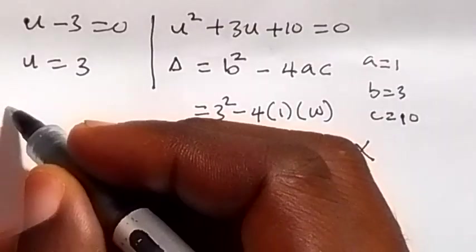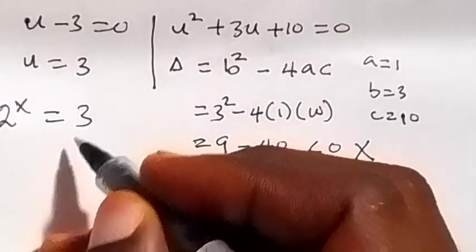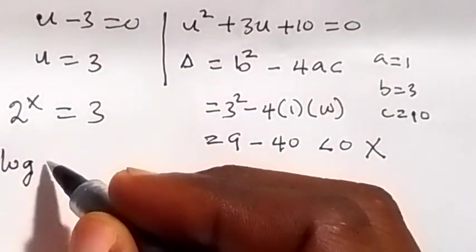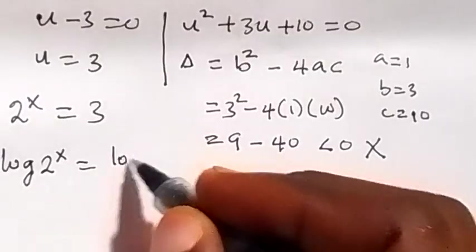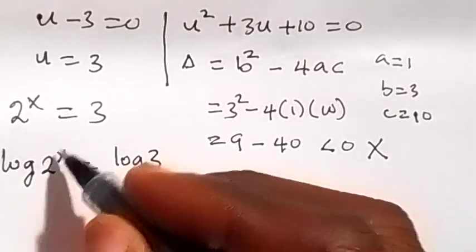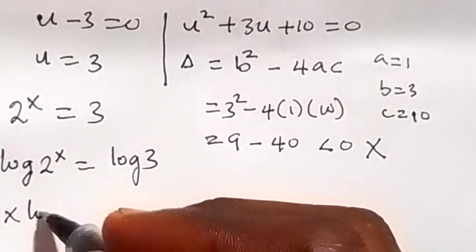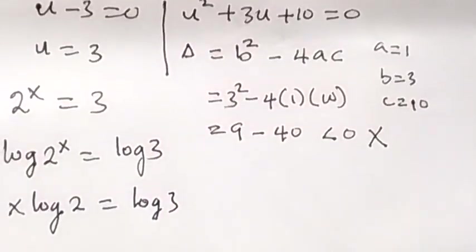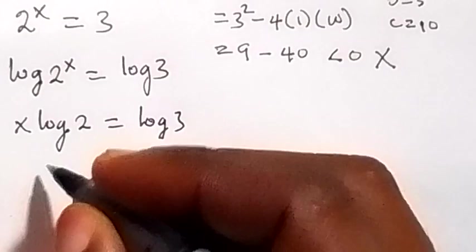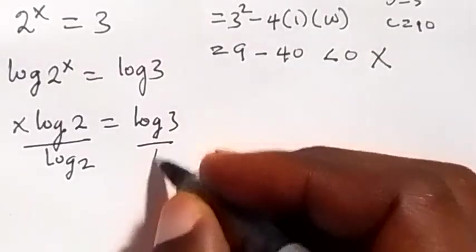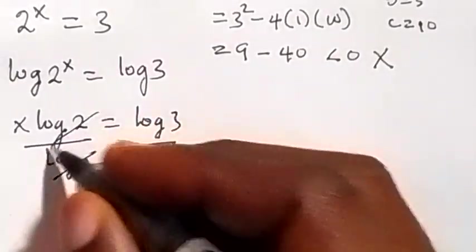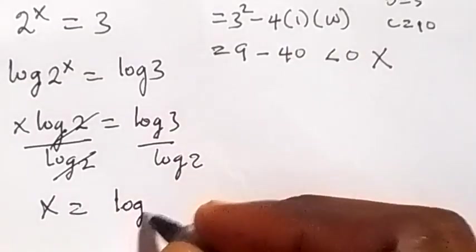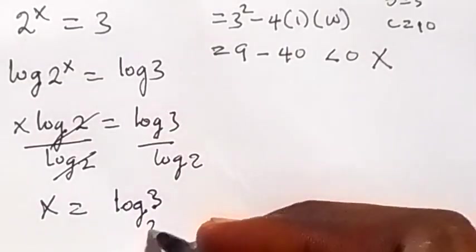Coming back, we have u equals to 3, and u is 2 raised to power x, so that's 2 raised to power x equals to 3. Finding x, we take the log on both sides: log of 2 raised to power x equals log 3. From the law of logarithms, x comes to the front, giving x log 2 equals log 3. Dividing both sides by log 2, x equals log 3 over log 2, which can also be written as log base 2 of 3.